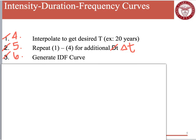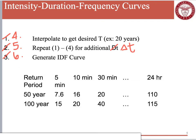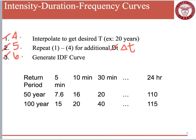When generating IDF curves, first create a table with return periods across the top, all the different durations, and then the intensity values. For example, a value of 20 inches per hour: that 20 is the intensity, 30 minutes is the duration, and 50-year is the frequency. So you have intensity, duration, and frequency all represented in the table.